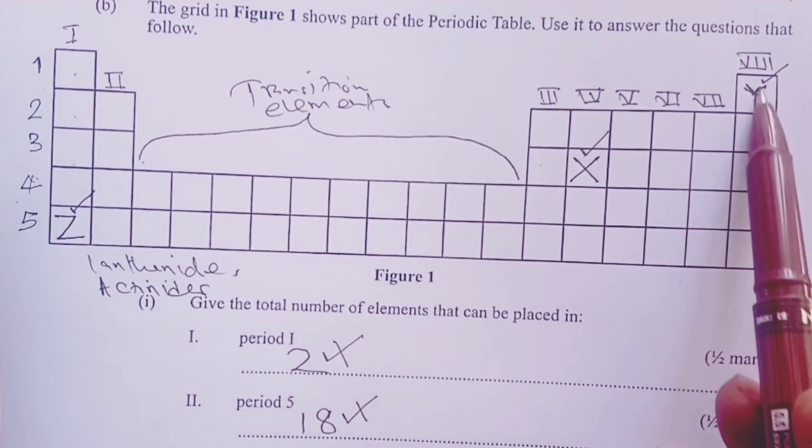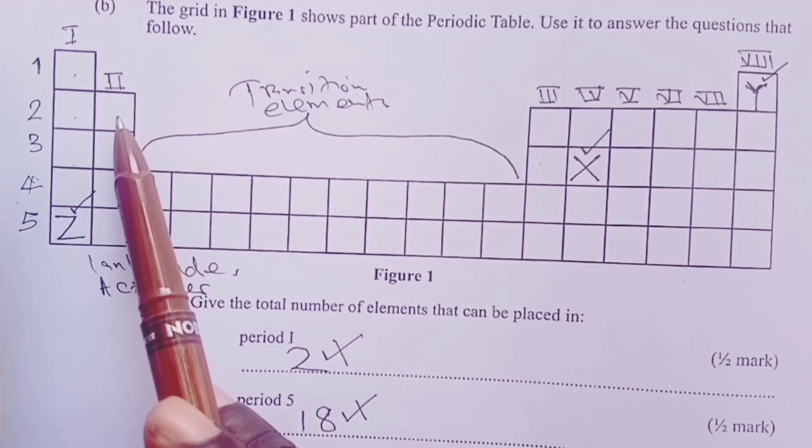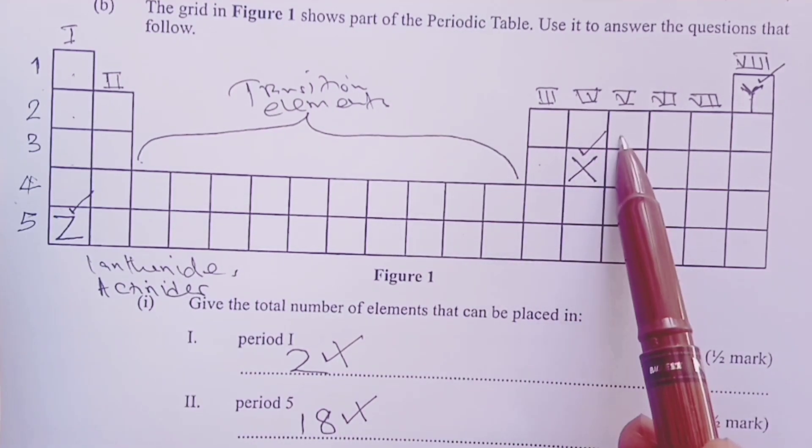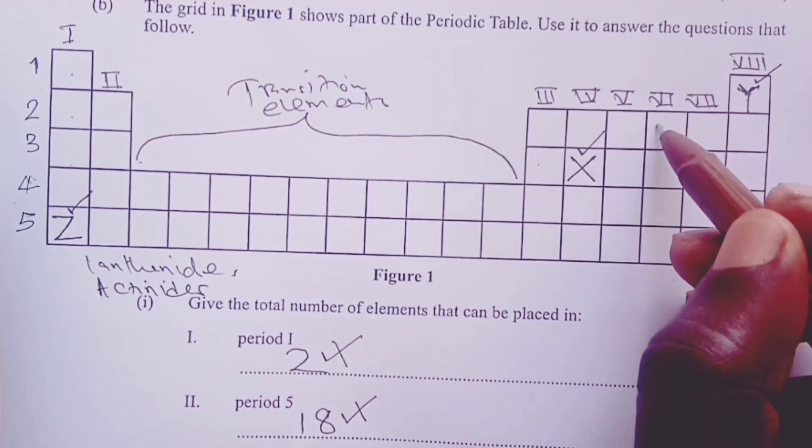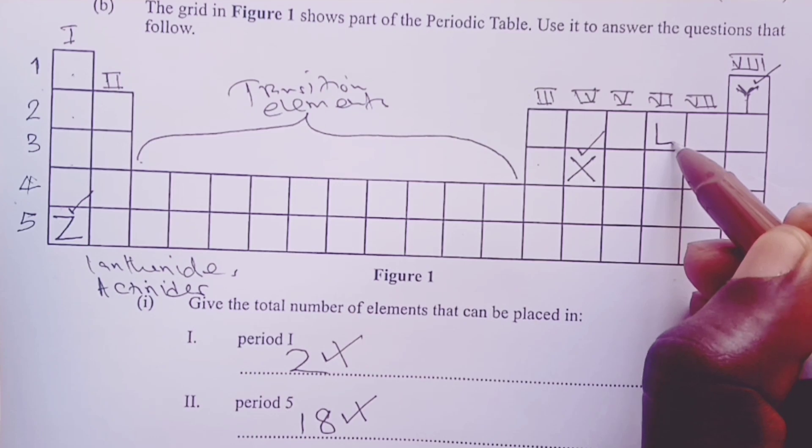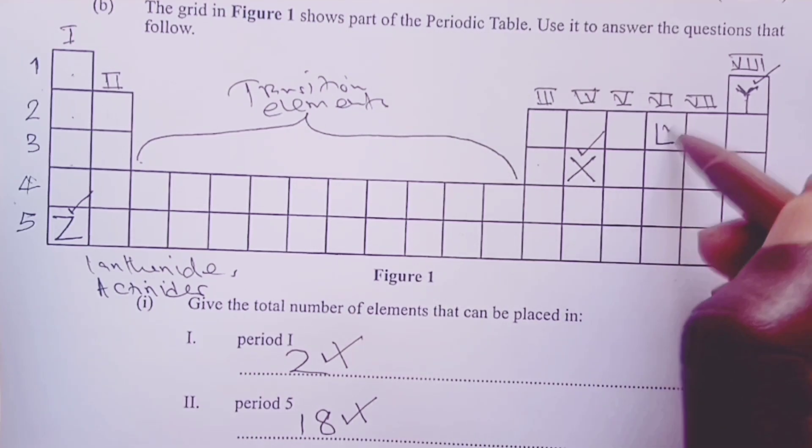So we go back to our grid and count periodically from here until we reach number 8. So we have 1, 2, 3, 4, 5, 6, 7, and 8. This is where your L would be for another one mark.